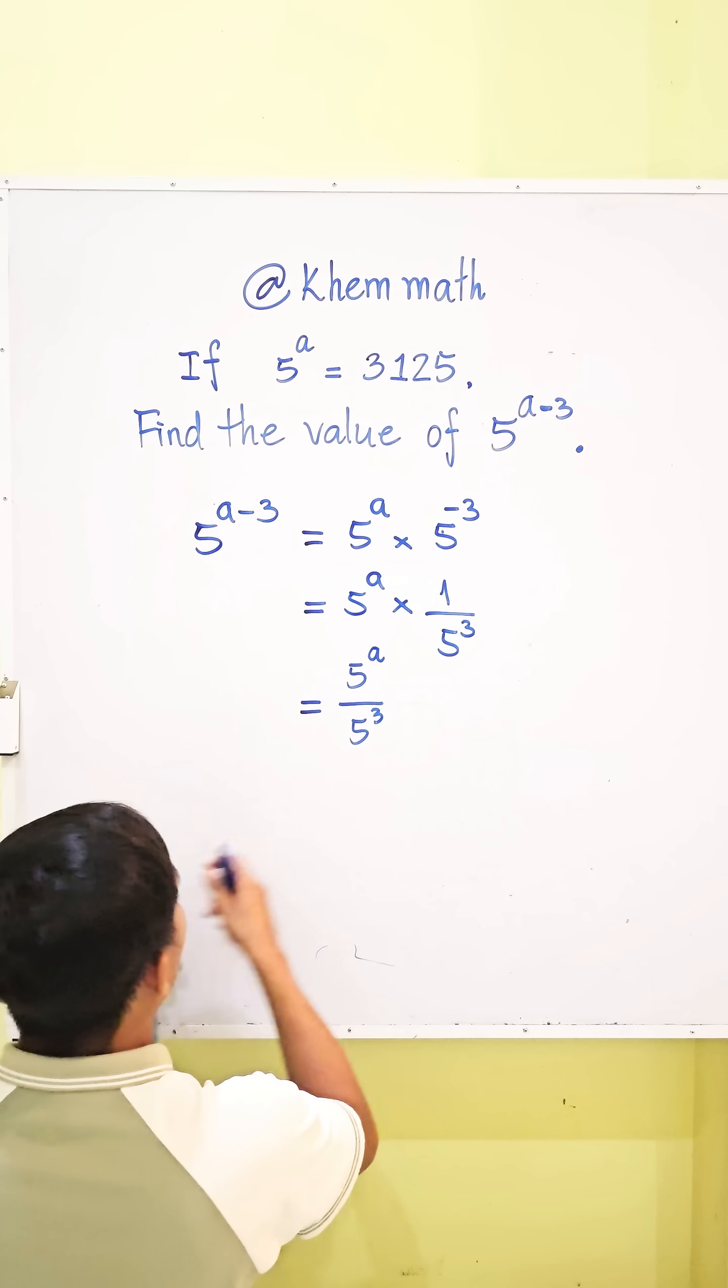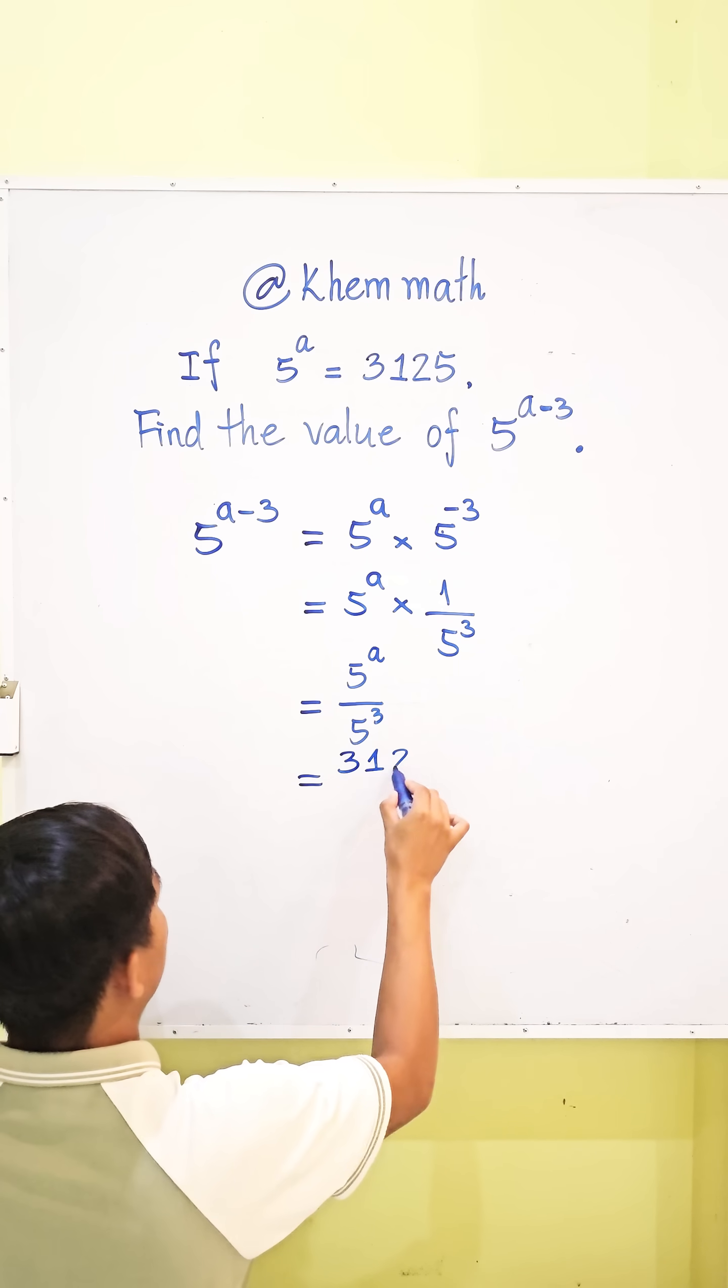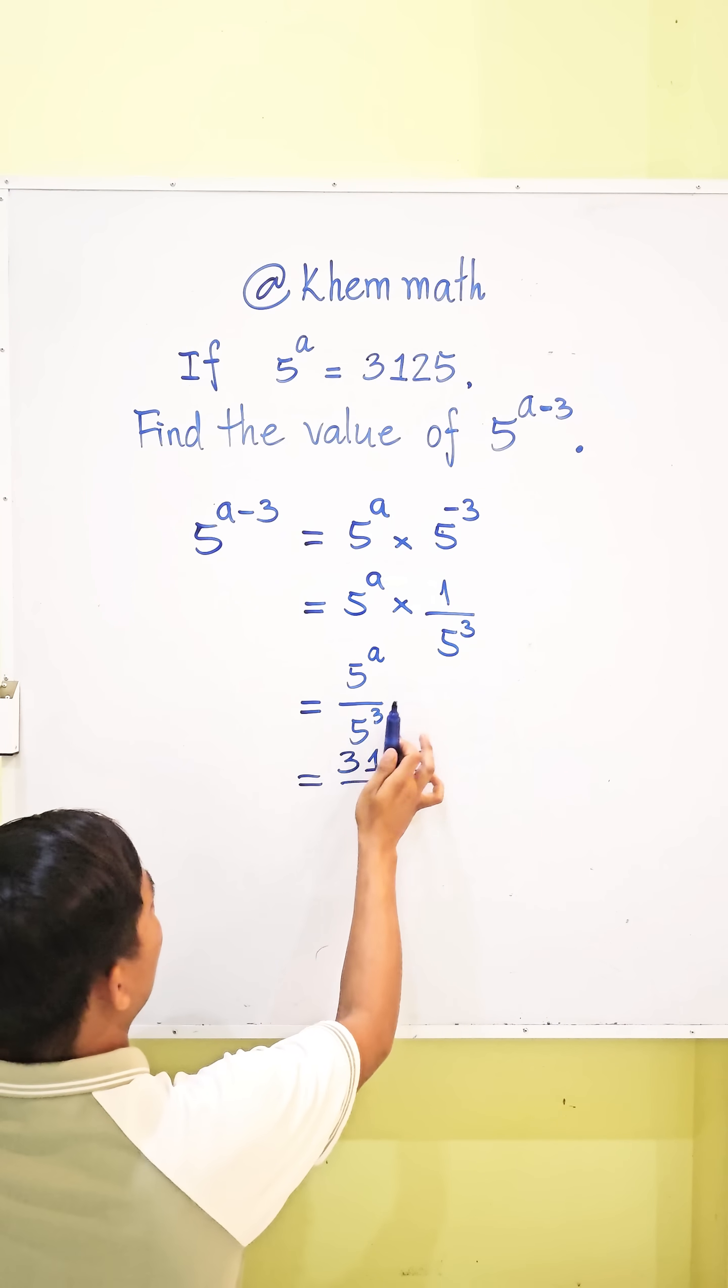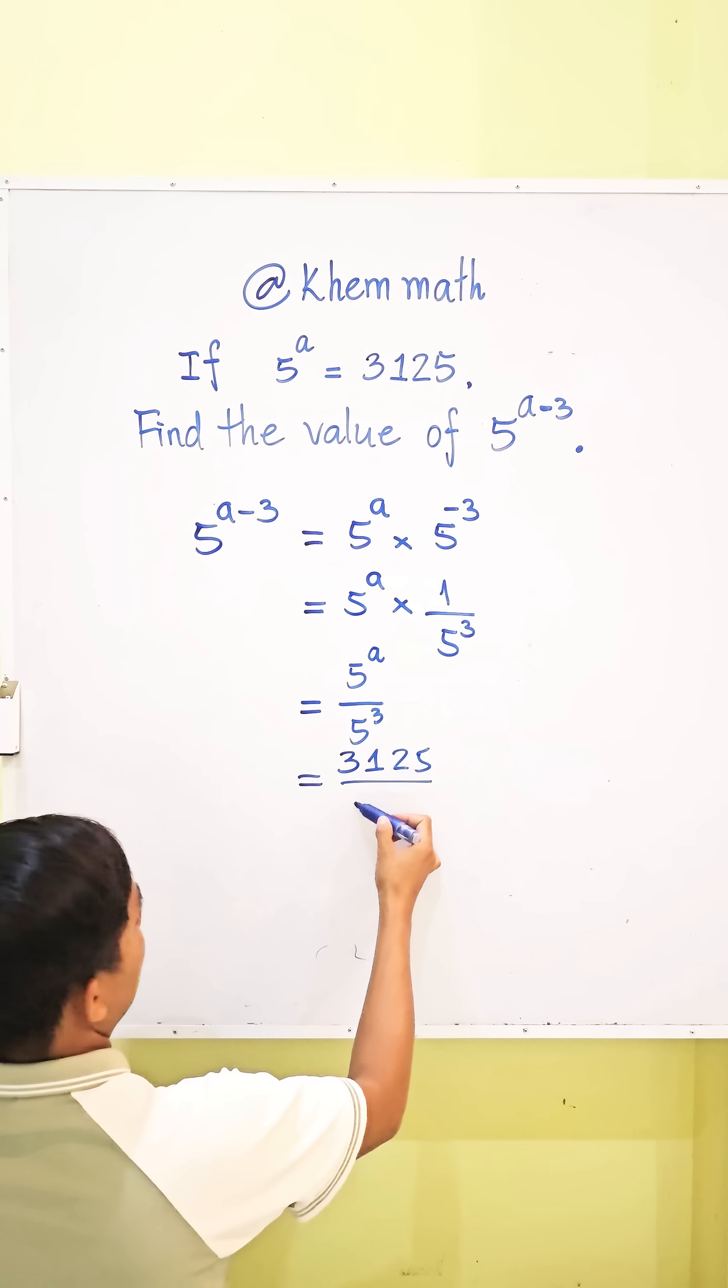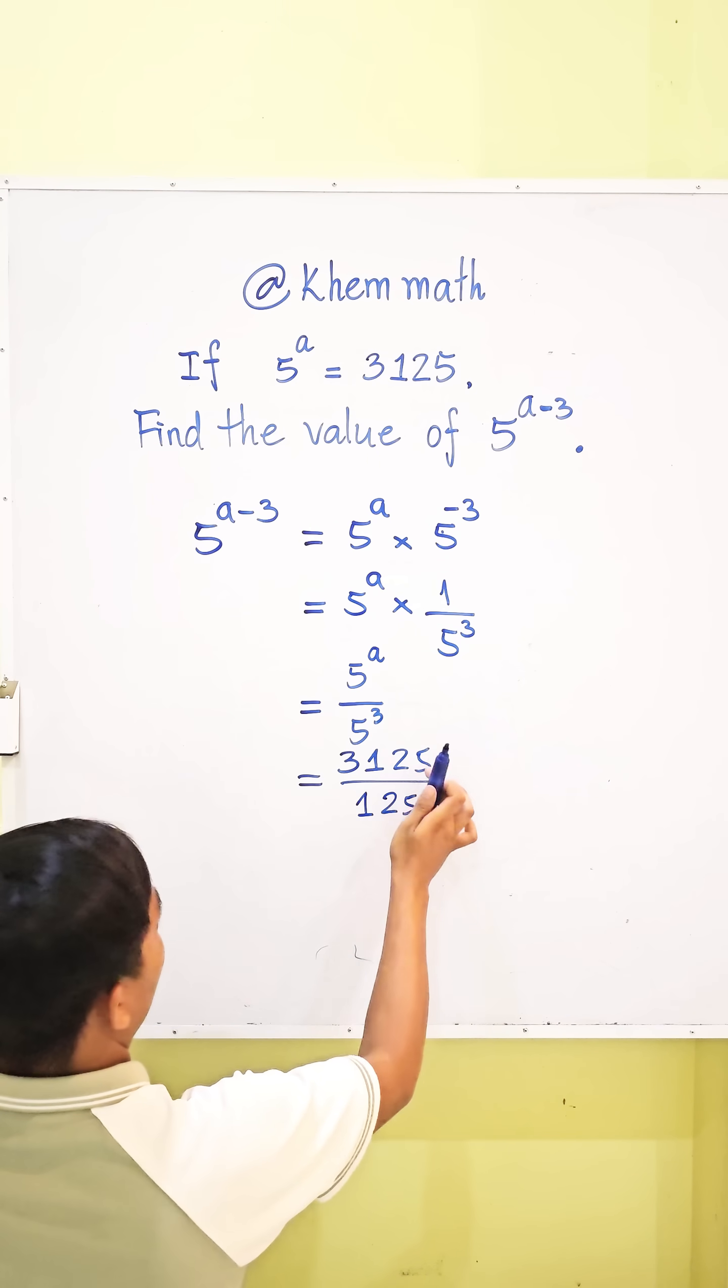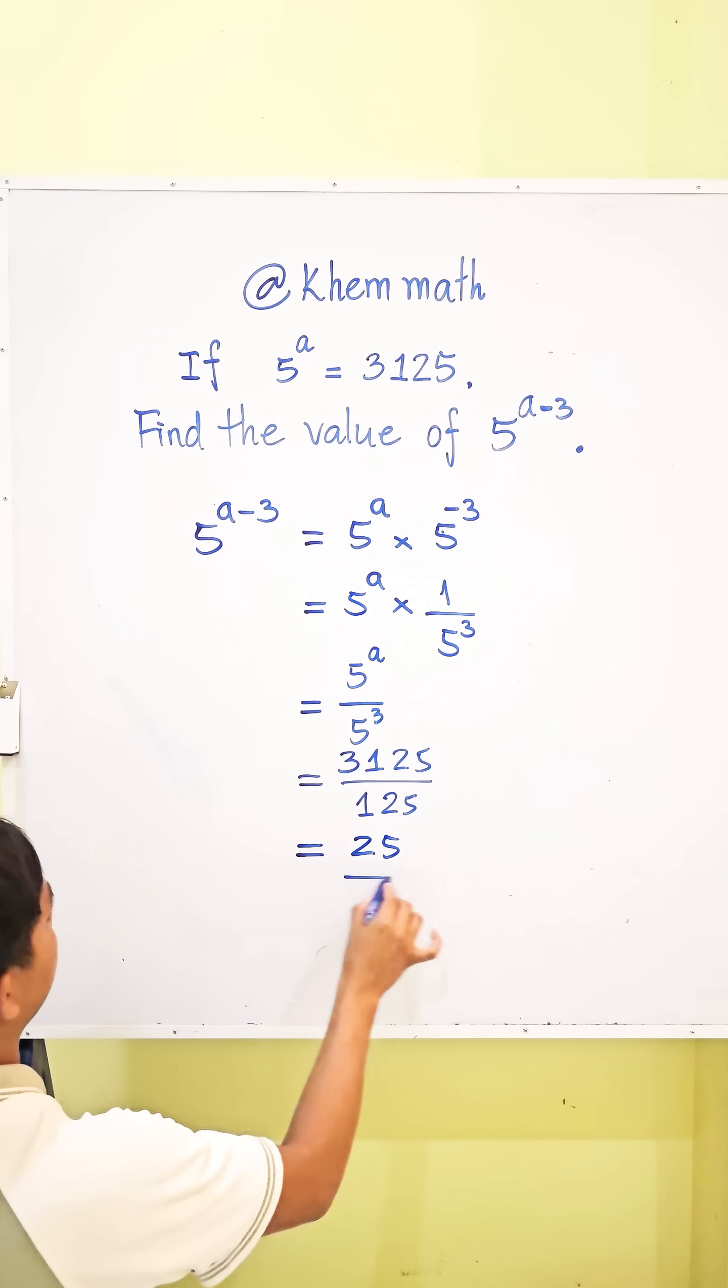So, it's equal 3,125 divided by 5 cube equals 1,125. So, we divide this. Equal 25 is our answer.